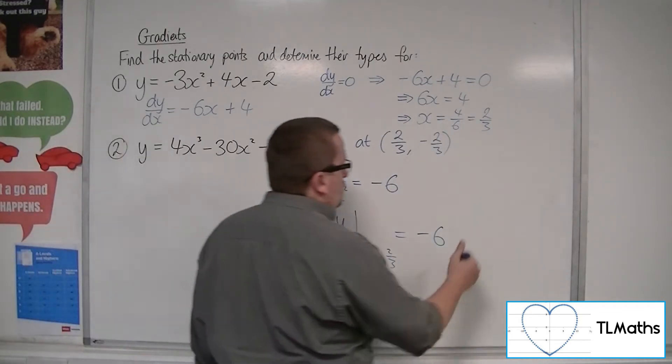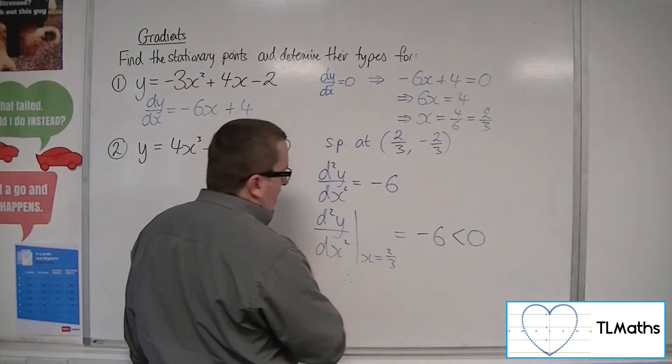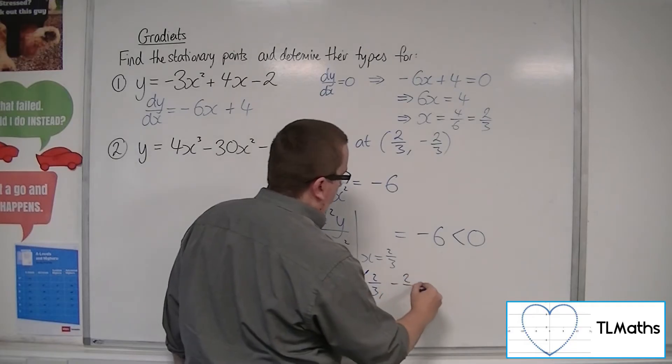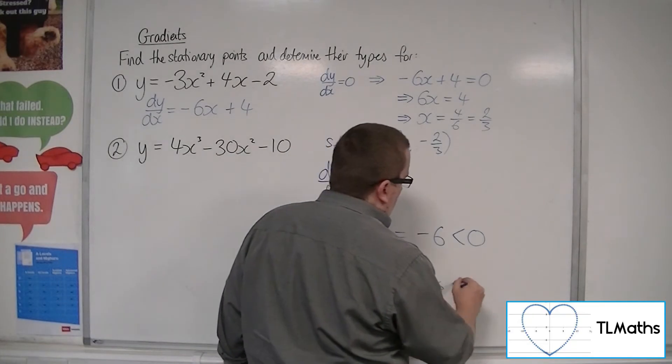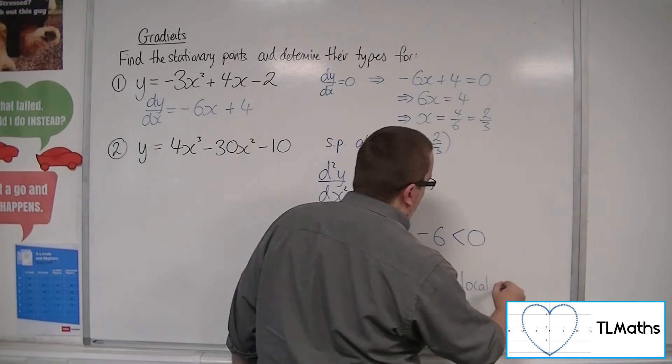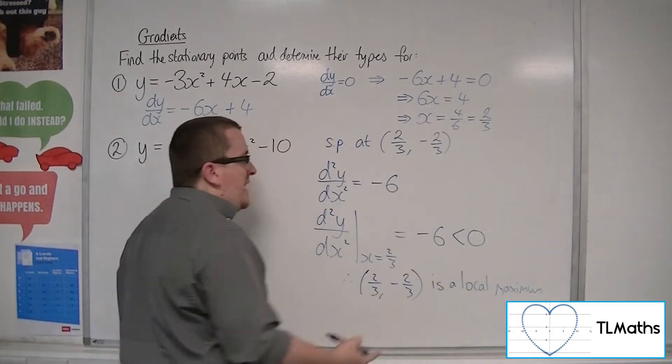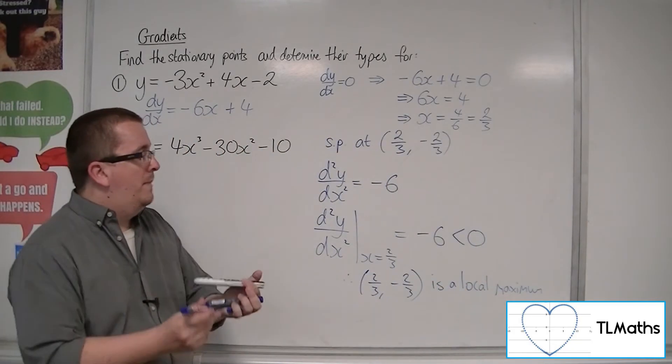Now because the second derivative is negative, that means, therefore, that 2 thirds, minus 2 thirds, the stationary point, is a local maximum. So because the second derivative is negative, our stationary point is a local maximum.